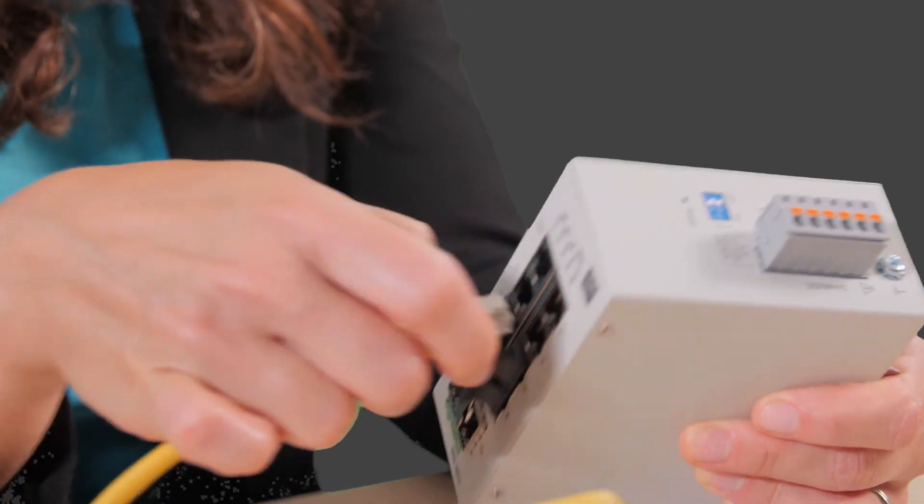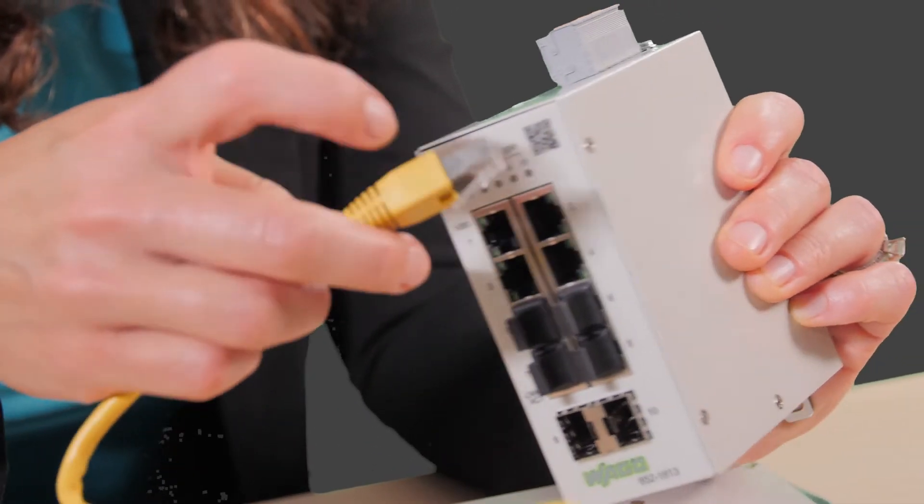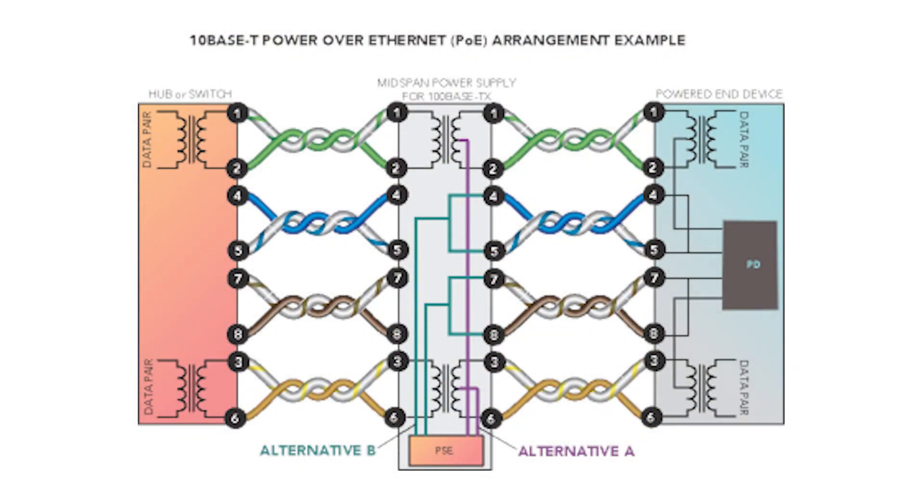Though neither of the samples we have here support Power over Ethernet, certain WAGO switches in fact do. These supply up to 30 watts per channel using standard twisted wire pairs, so voltage doesn't degrade data signals also carried on the conductors.